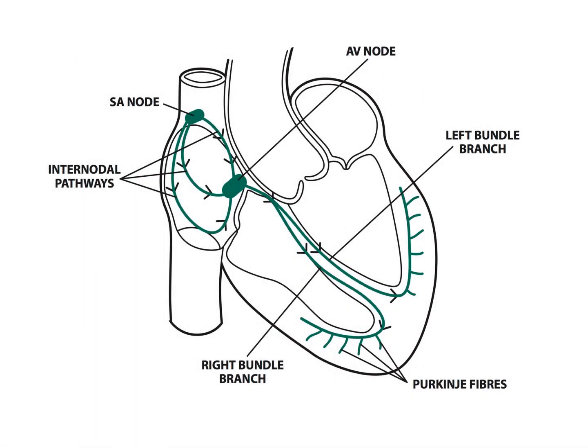In order to understand ECG, it is important to understand the conduction system of the heart, which begins from the sinoatrial node, the pacemaker, which fires a signal to the atrioventricular node, then the bundle of His, right and left bundle branches, and Purkinje fibers, so that the heart can contract. When there is a stimulus, it is called depolarization, and when there is relaxation, it is called repolarization, and we can see all this in the form of waveforms.